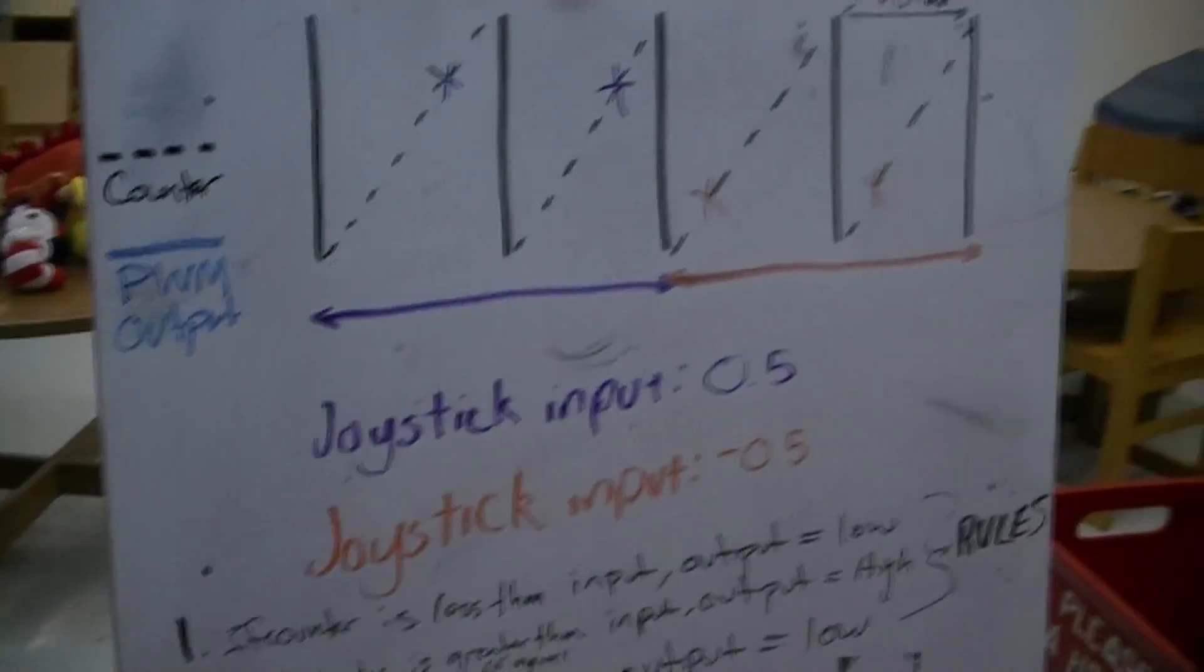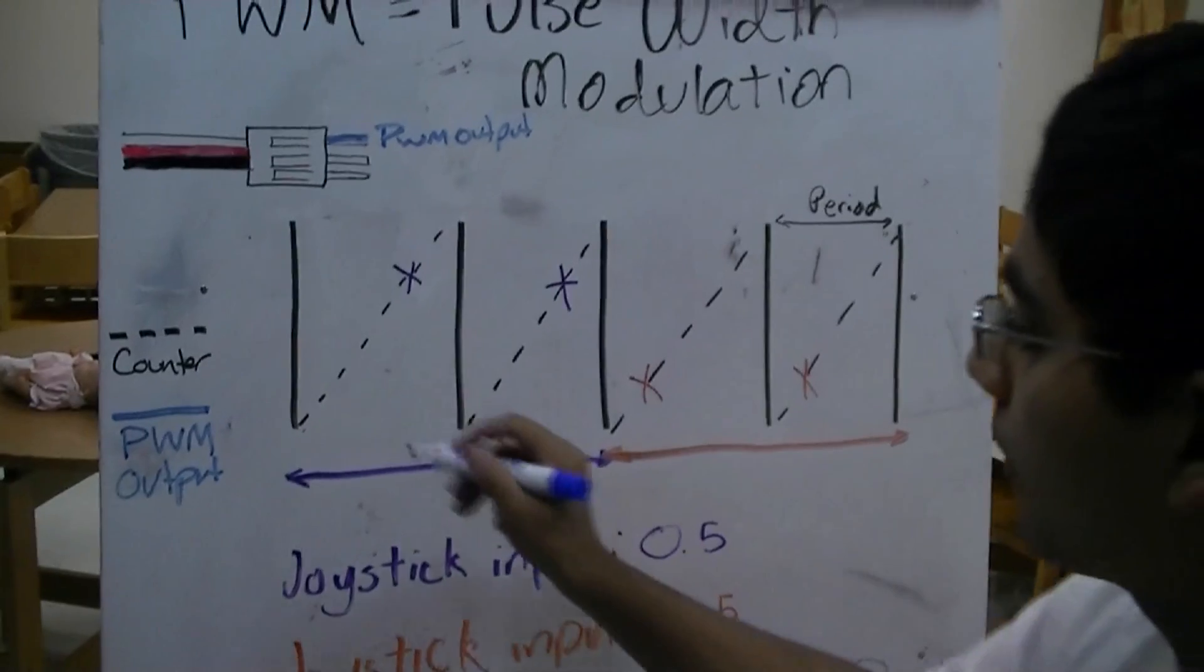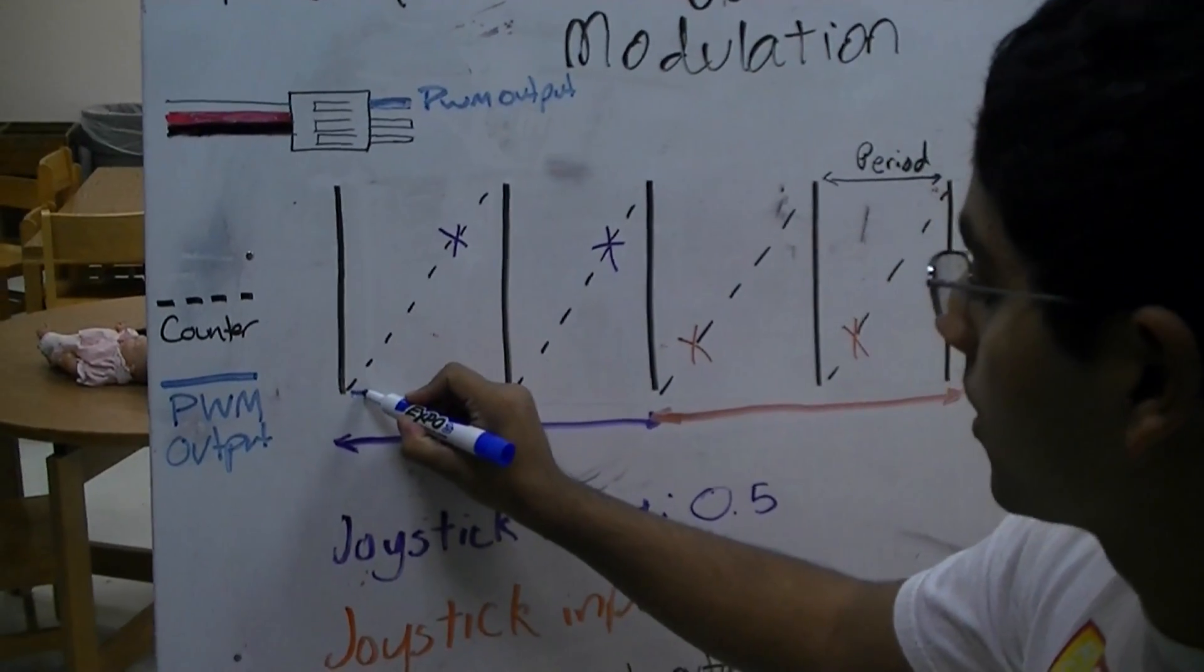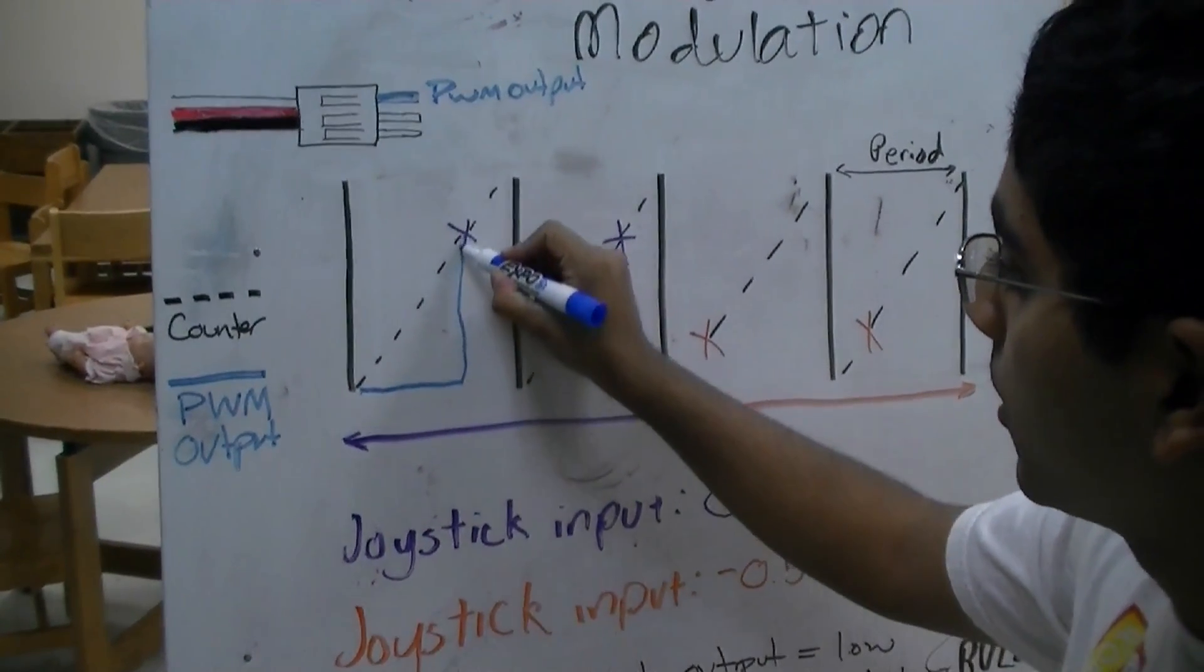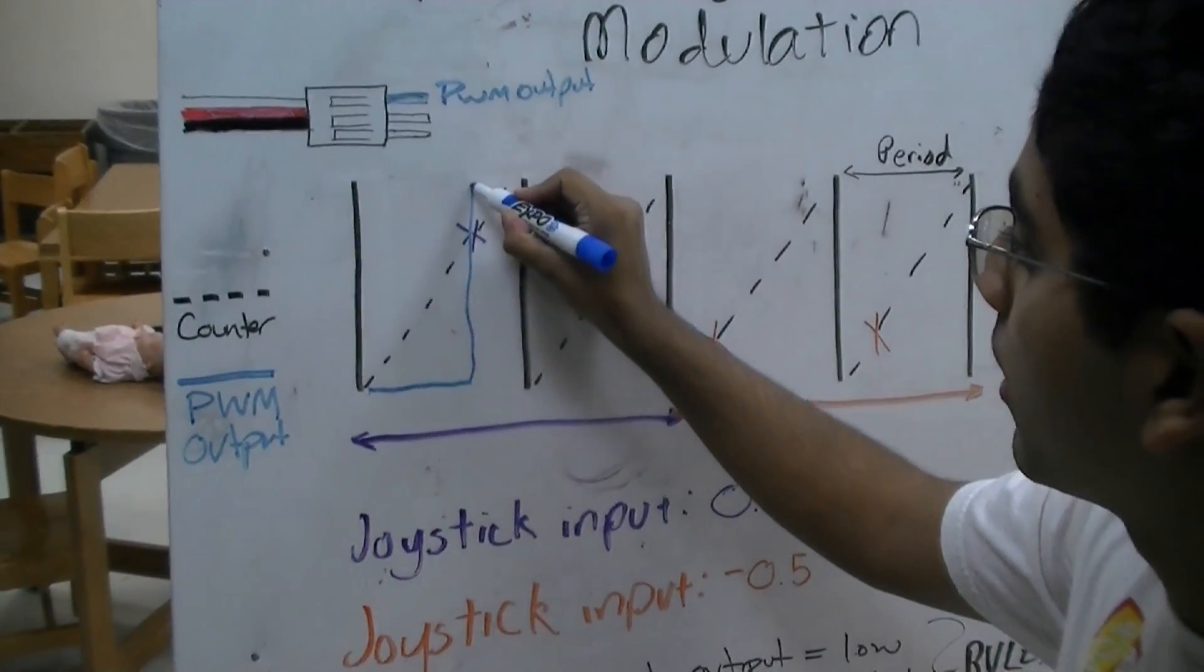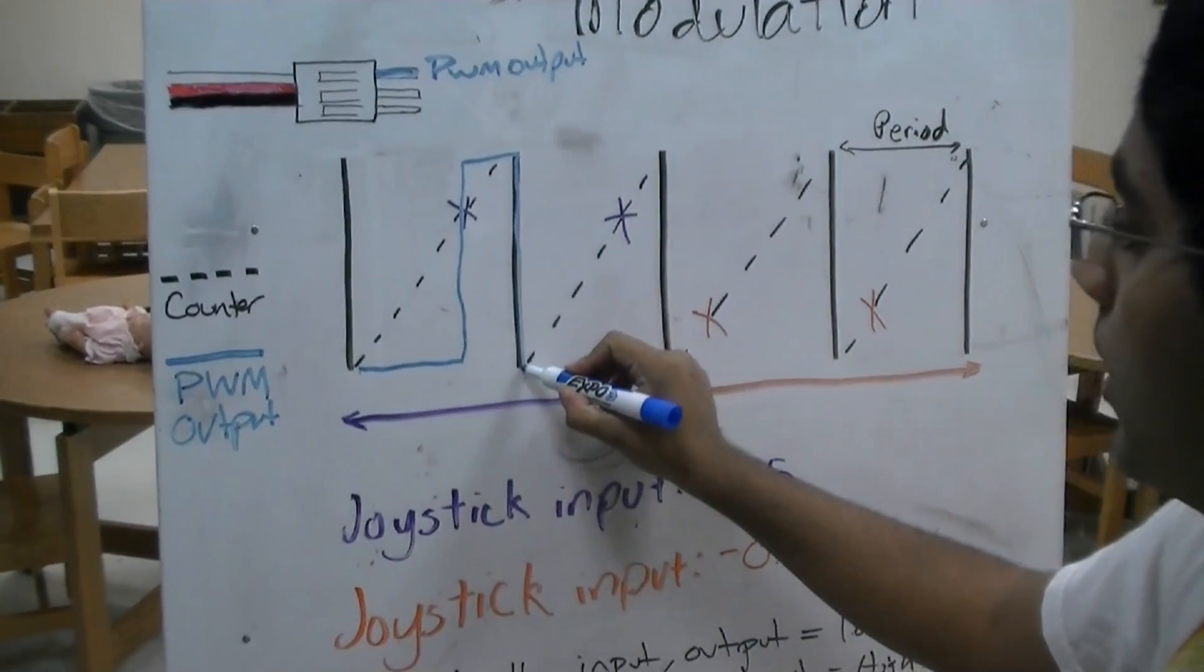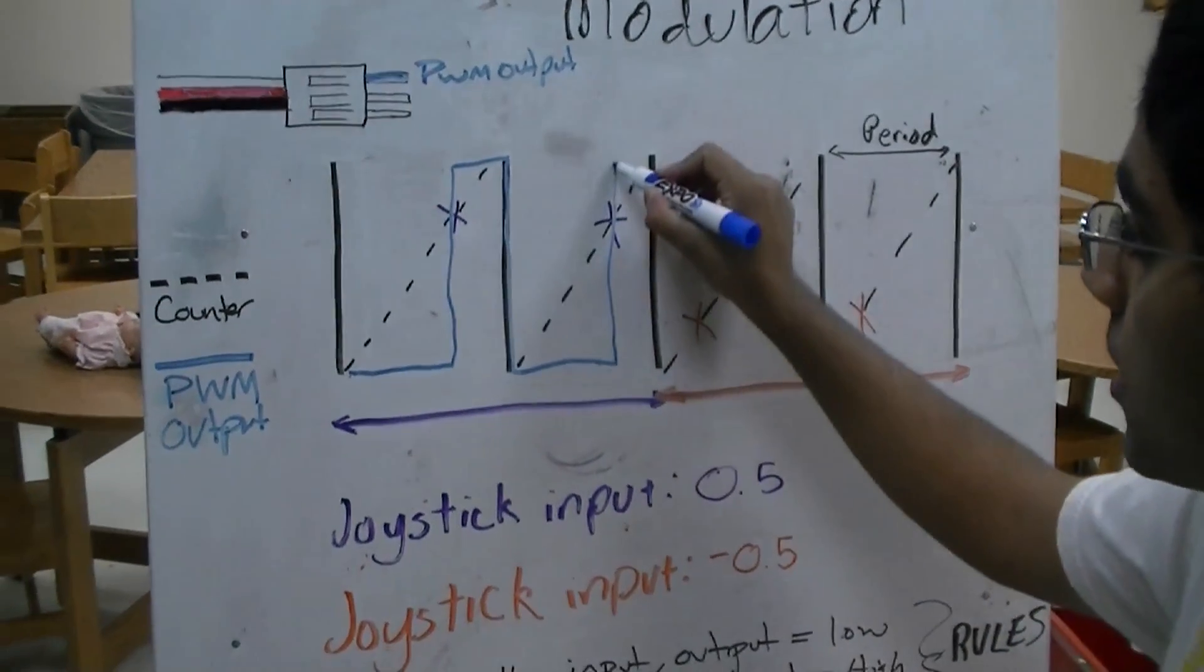So here I'll show you how it works. For our purple joystick input, we have it as 0.5. So as we can see, the counter is less than the input. Less, less, less. Oh! It's equal to. So it goes up and it's greater. And then since it comes back here, it rolls over and it resets. Same thing. Oh! Equal. Goes up higher.